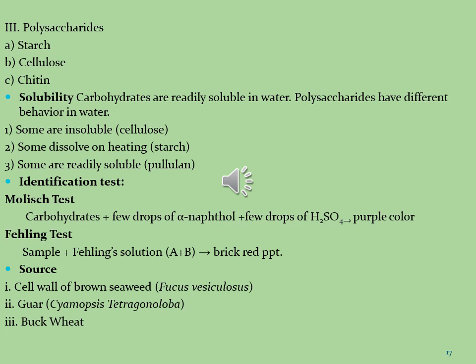Three examples of polysaccharides are starch, cellulose, and chitin. Starch is a common carbohydrate in the human diet and is contained in many staple foods. Major sources include cereals such as rice, wheat, and maize, and root vegetables such as potatoes and cassava. In food processing, starch is typically used as a thickening and stabilizing agent in puddings, custards, soups, sauces, gravies, pie fillings, salad dressings, noodles, and pastas.